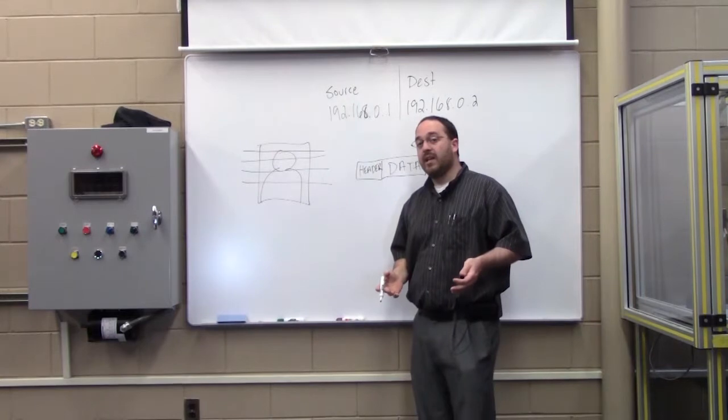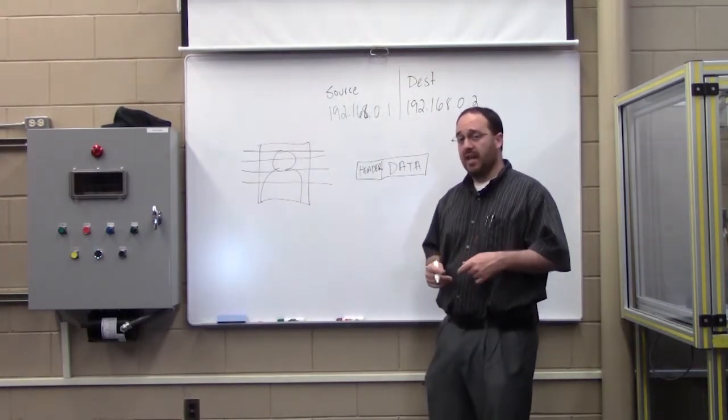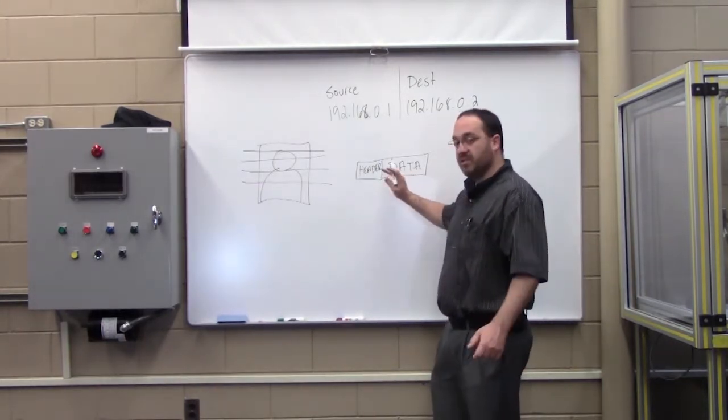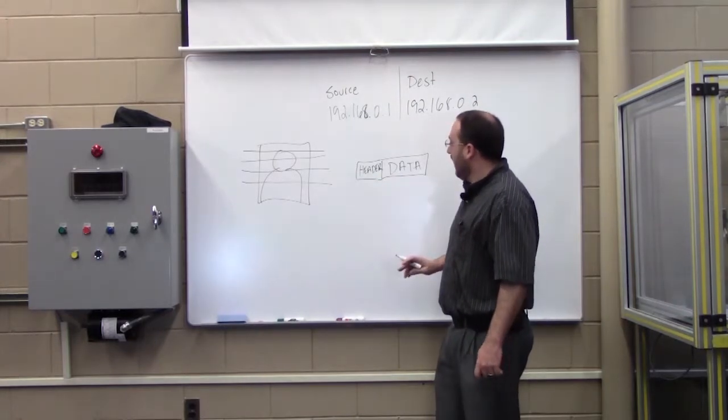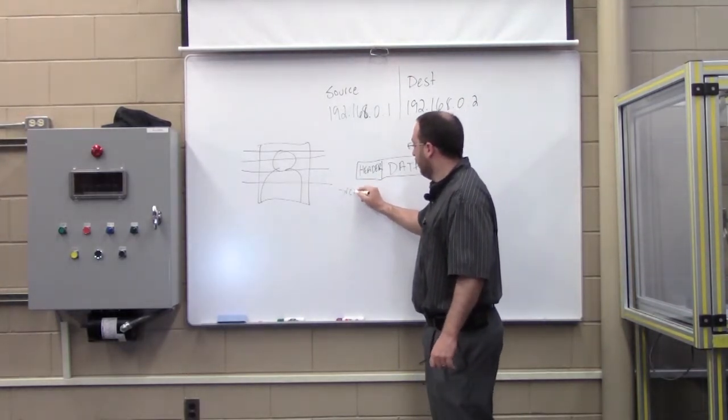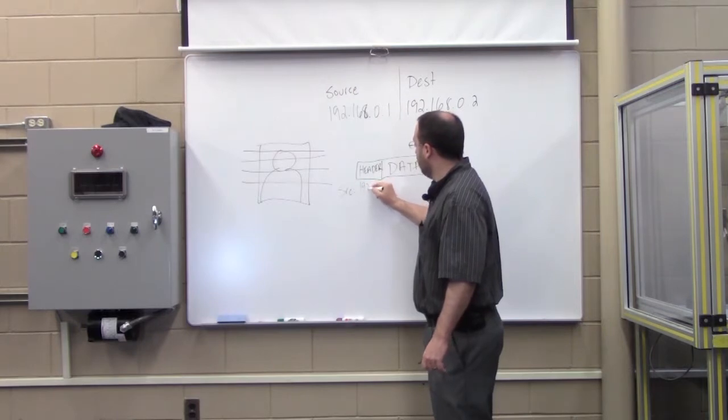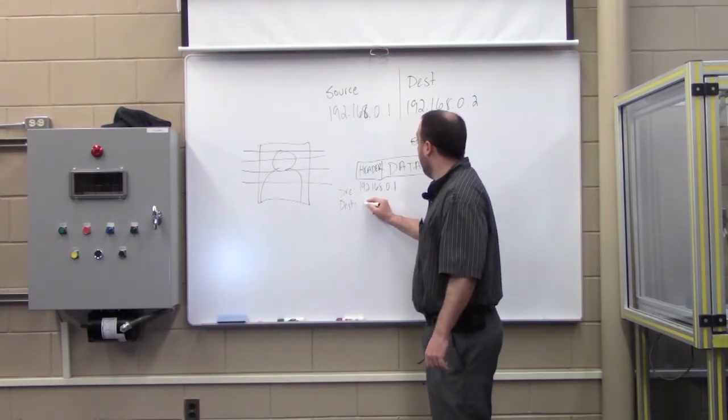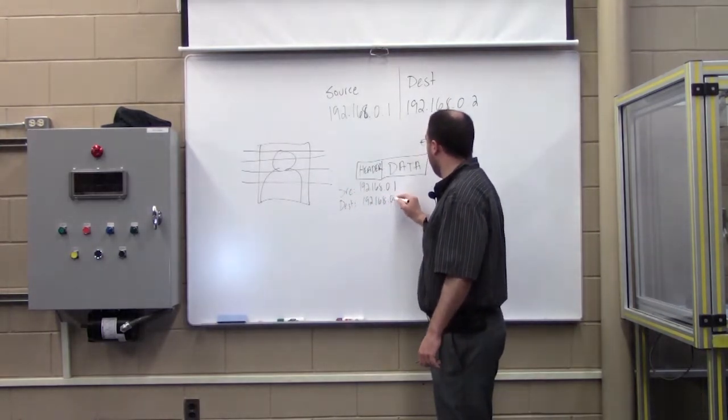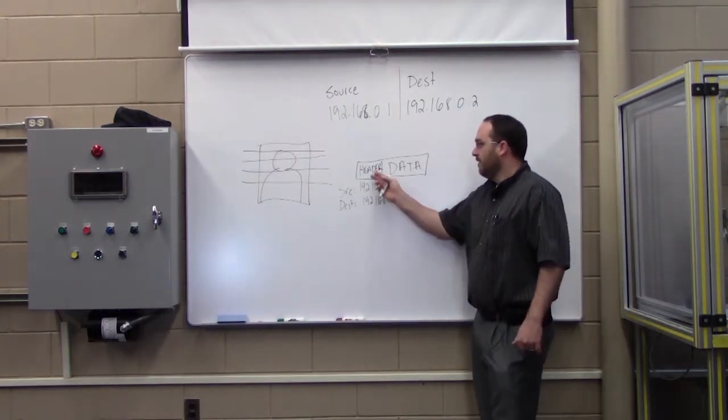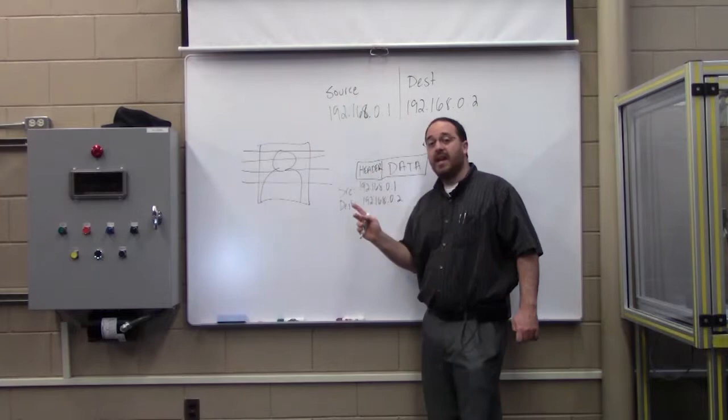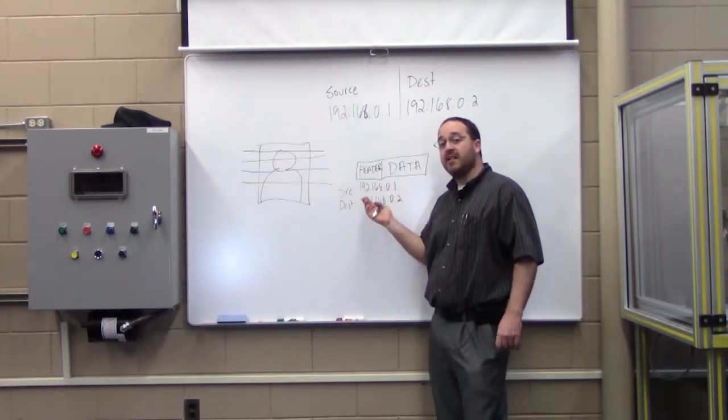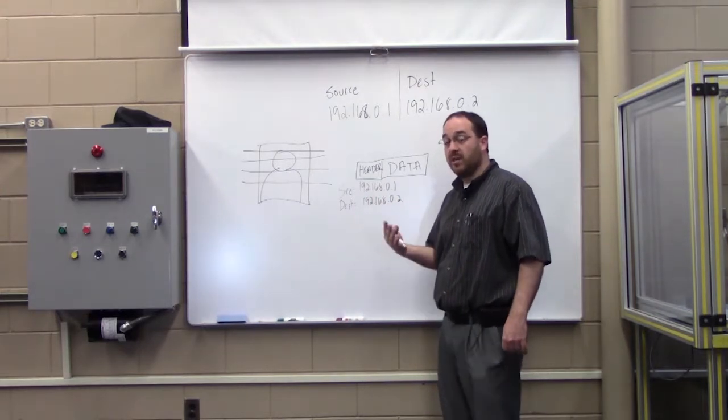Remember that on a local area network, MAC addresses are used to communicate. But we're going to talk about an IP packet right here. So, just for simplicity purposes. So, the header will have a source address of 192.168.0.1 and a destination of 192.168.0.2. So basically, this little header has information about addressing. Where does the packet, where does this data need to go? What computer is it meant for? What is it destined for?